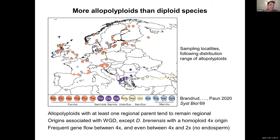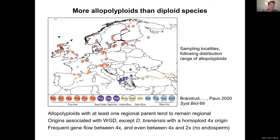Most of these polyploids — with one exception — had their origin associated with a whole genome doubling event, except D. Isabelleana, which had a homoploid origin resulting from hybridization between at least two different polyploids. We also observe frequent gene flow between the tetraploids, but also between the tetraploids and the diploids, as I will show in a couple of slides.